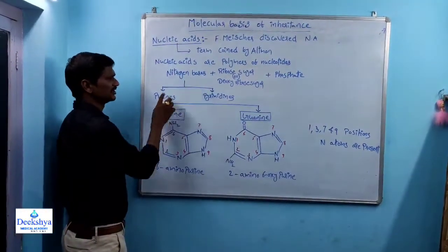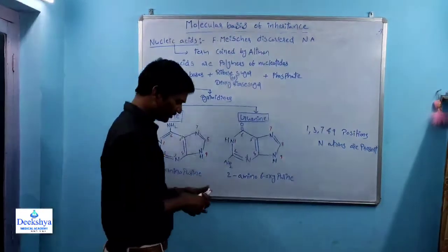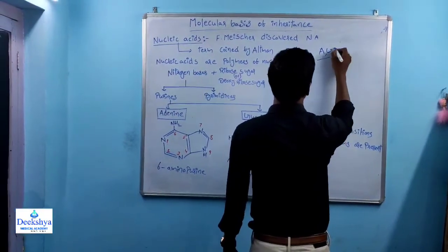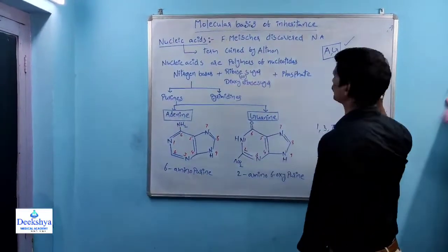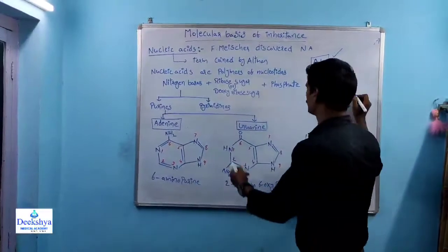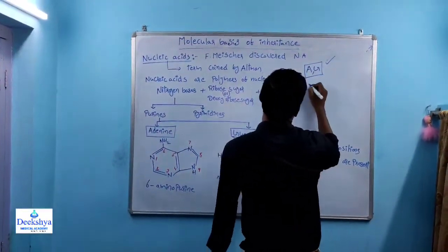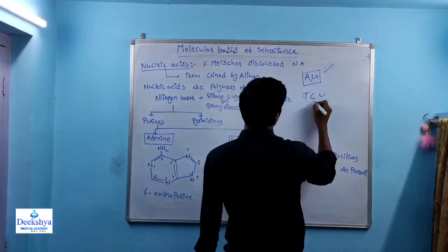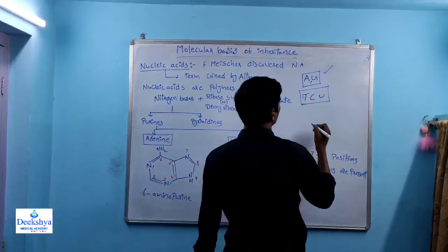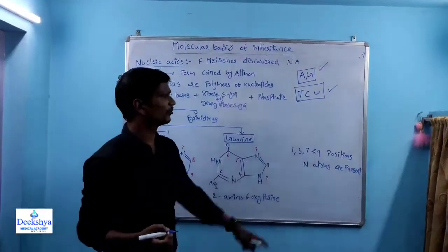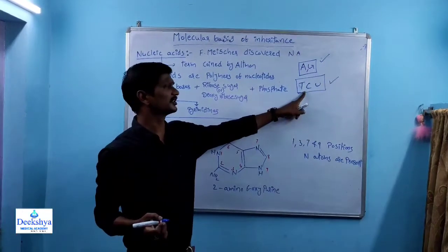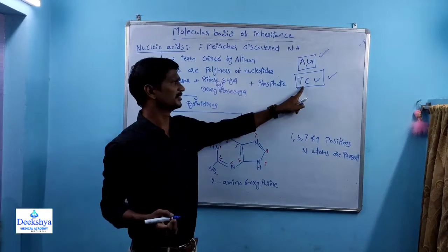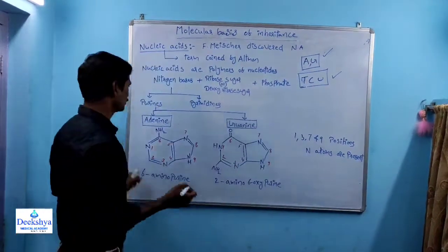Within nitrogen bases, there are purines and pyrimidines. Adenine and Guanine are called purines. Within pyrimidines, there are three types: Thymine, Cytosine, and Uracil. Purines: Adenine and Guanine. Pyrimidines: Thymine, Cytosine, and Uracil.